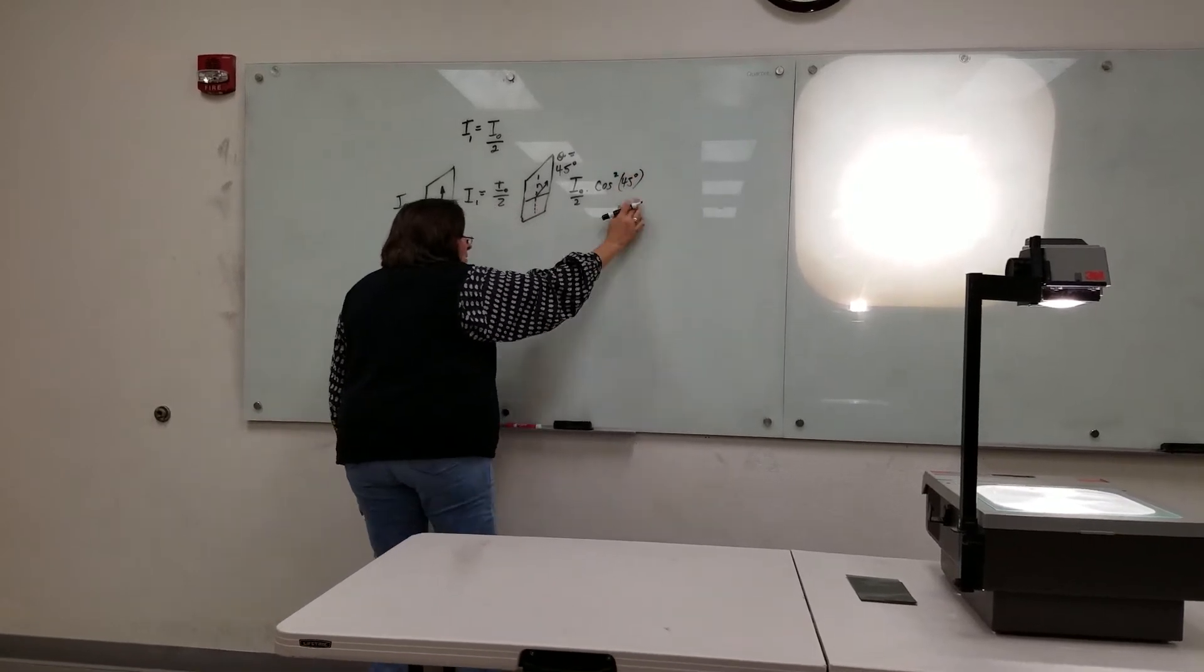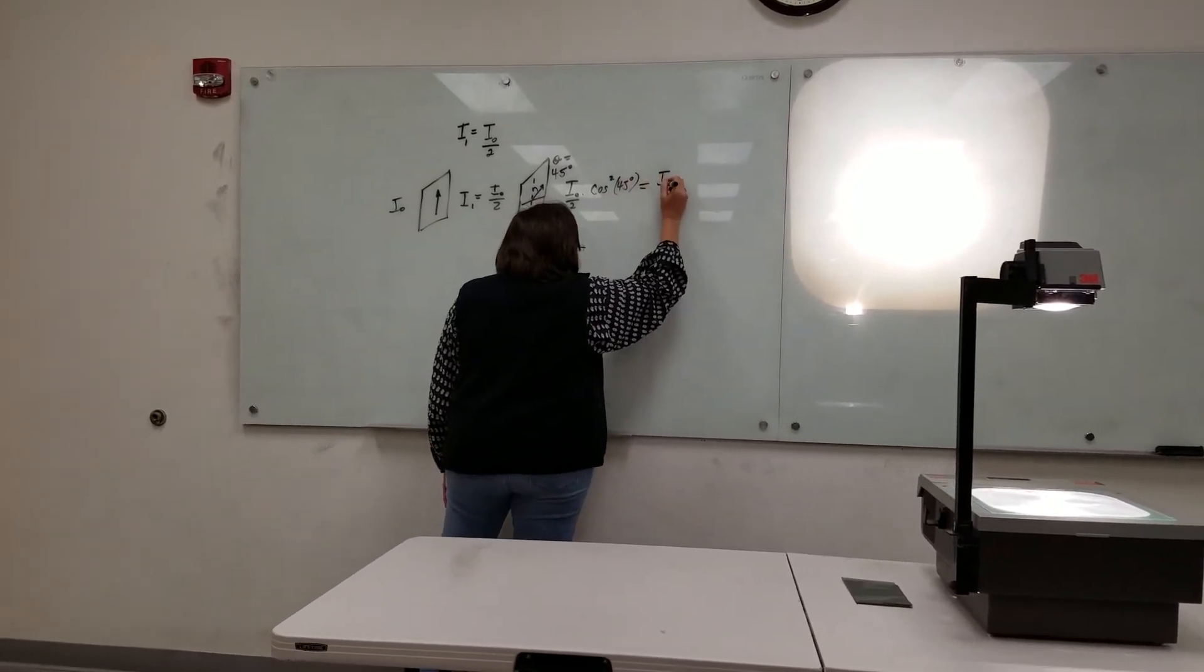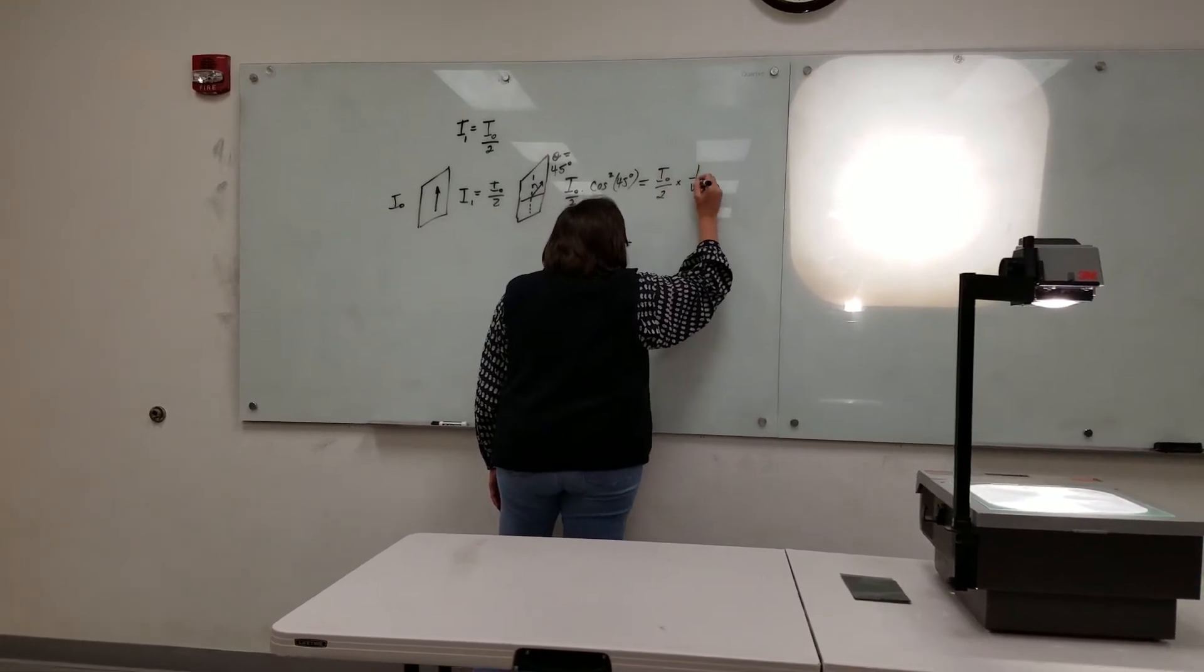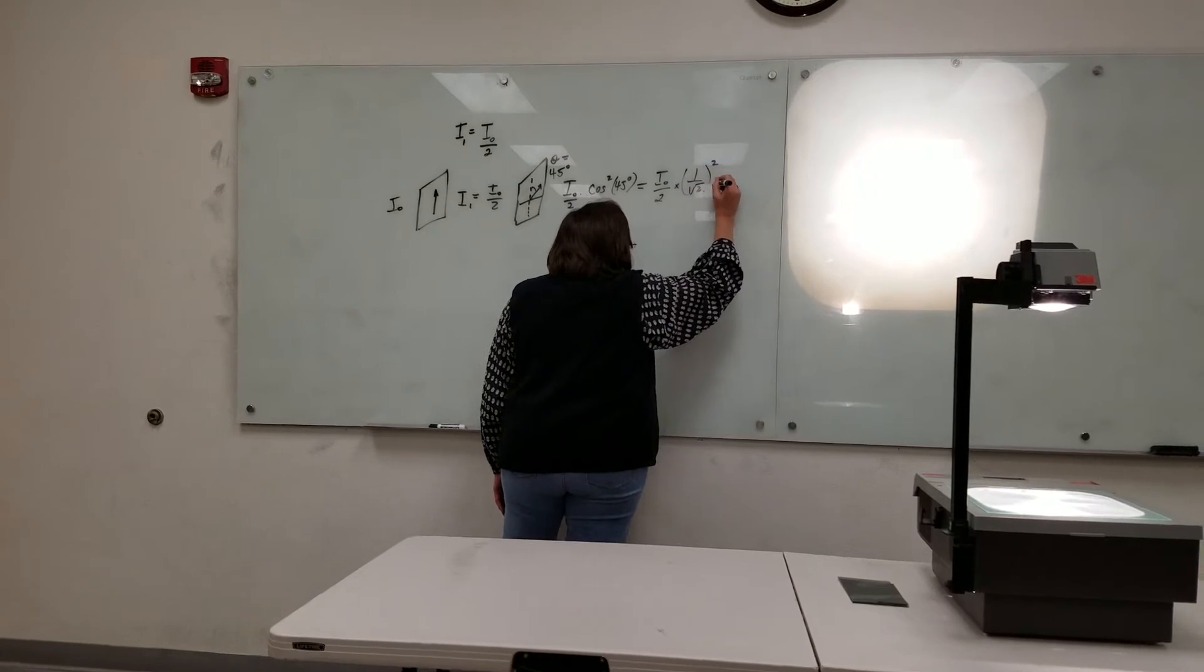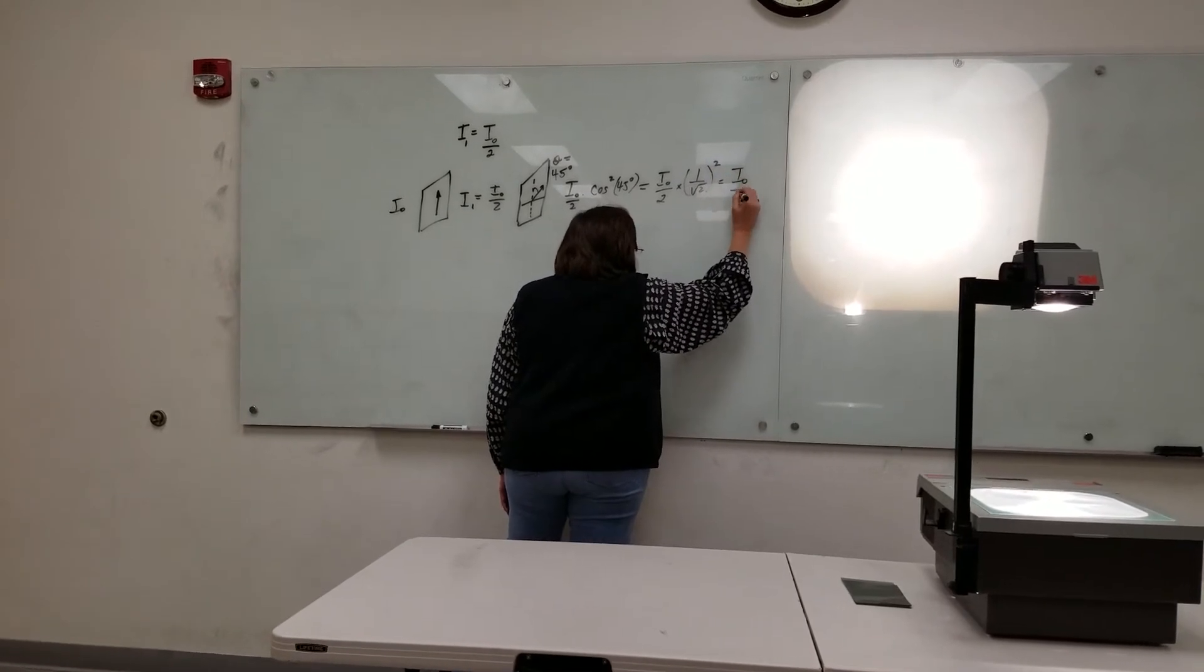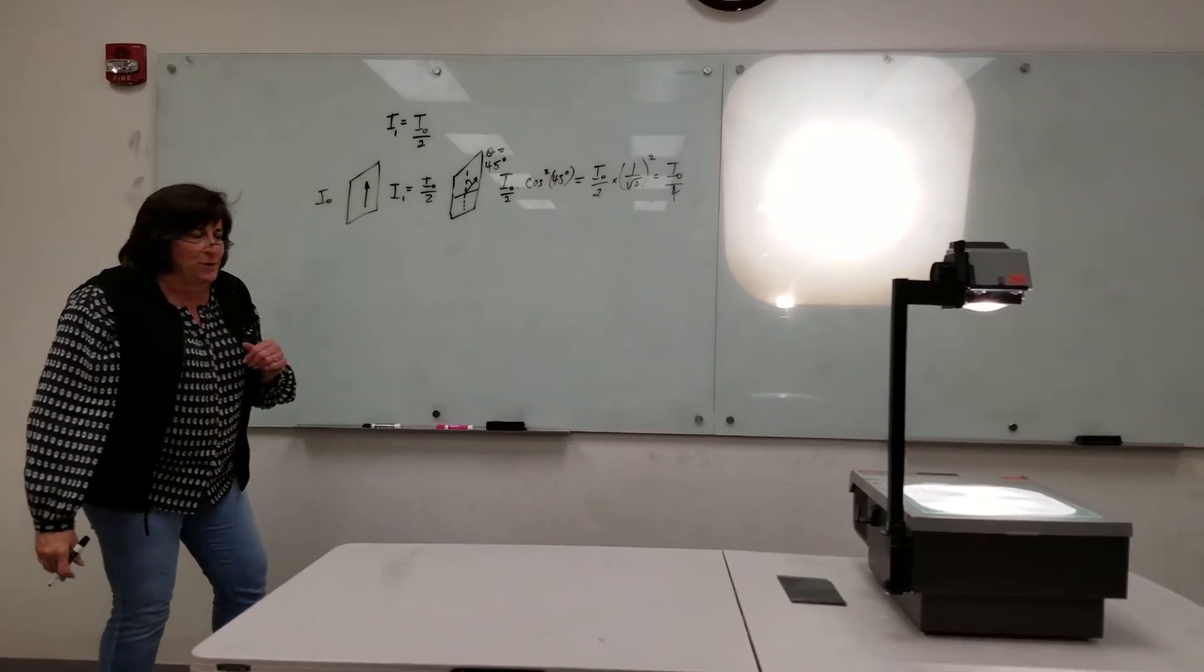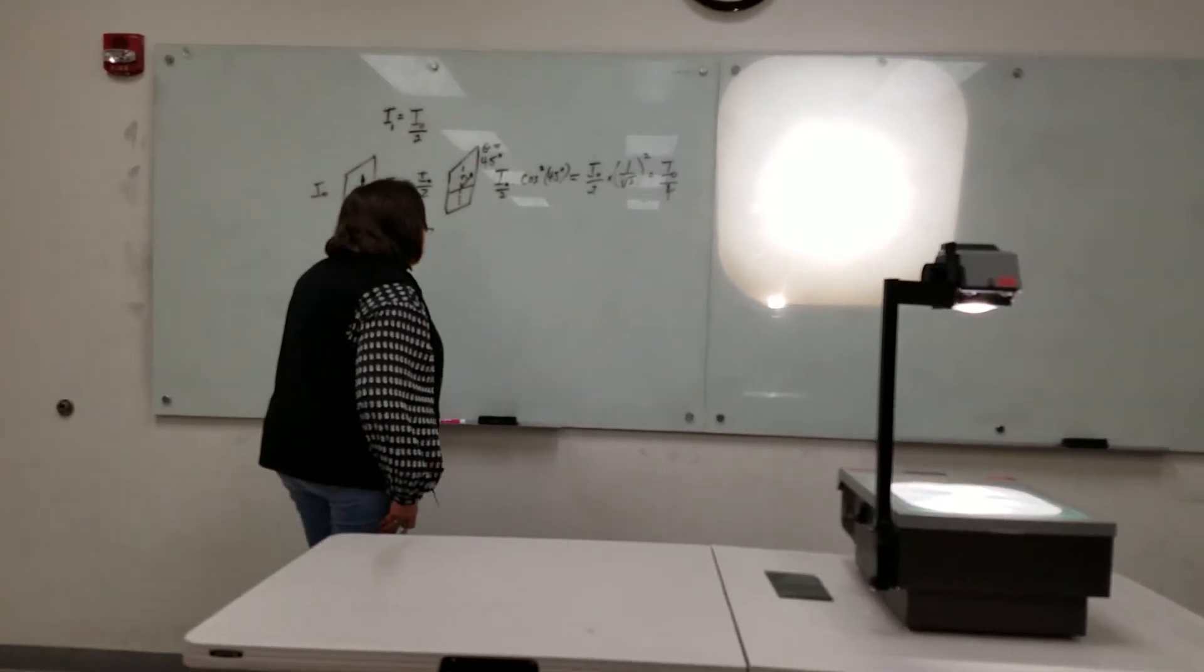Well, cosine of 45 degrees is 1 over square root of 2. And when we square it then, we'll get I naught over 4. So what comes out of the second polarizer is 1 fourth the original, 25% the original.